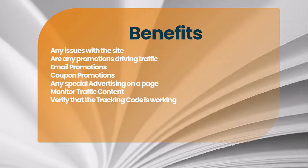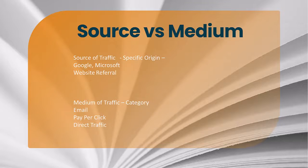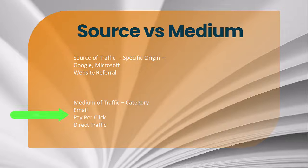One of the things you need to establish early on, whether it's Universal Analytics or GA4, is understanding the difference between source and medium. This is probably the biggest differentiator between new users and experienced Google Analytics users. The source of the traffic is the specific origin — where they came from — whether it's Google, Microsoft, a website referral, or display traffic. The medium is the category of traffic.